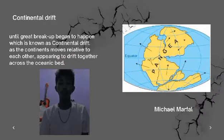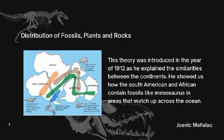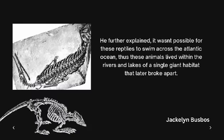Since the great breakup began to happen, which is known as continental drift, the continents moved relative to each other, appearing to drift together across the ocean. This theory was introduced in the year 1901, as Wegener explained the similarities between the continents. He showed us how South America and Africa contain matching fossils in areas that line up across the ocean. He further explained it wasn't possible for these reptiles to swim across the Atlantic Ocean.